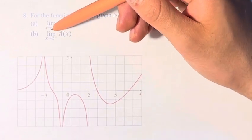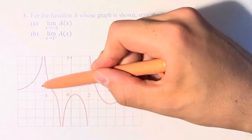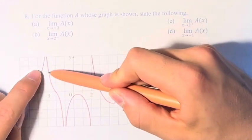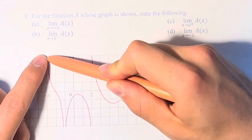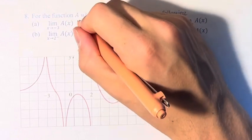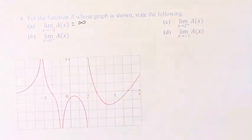So you have the limit as x approaches negative 3 of A(x). So x is equal to negative 3 is right here. And we can see, as we get closer and closer to negative 3 on the x-axis, the y-axis goes off to larger and larger values, and we can say that it goes off to infinity. Therefore, the limit is equal to infinity.